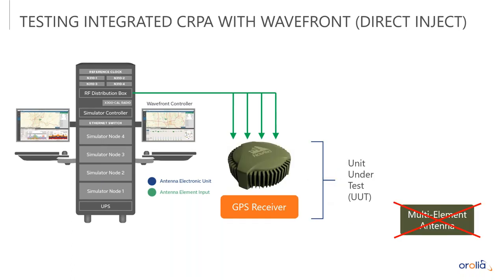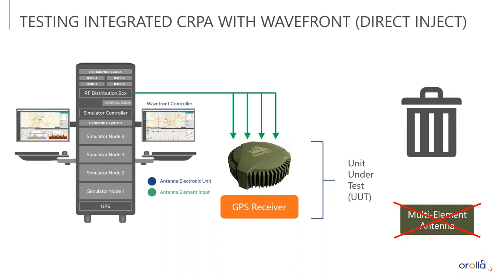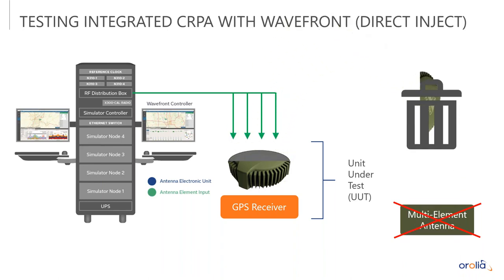So what do you do in the case of an integrated or single-enclosure SERPA — how do you use a simulator to test it? Some people think you can't, but you can. Typically it requires some cooperation with the manufacturer, but basically you have to take the top off and get access to the RF connectors inside and connect directly that way. We have removed the multi-element antenna and are connected directly to the antenna electronics, and once you've physically made these connections the test can proceed as normal.